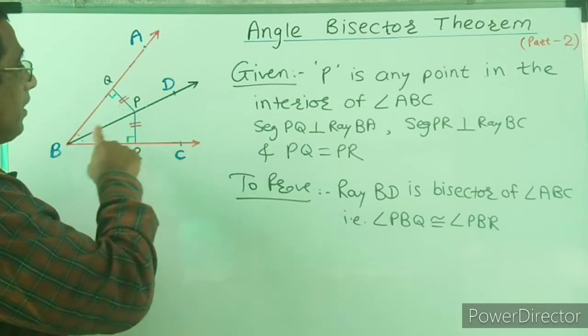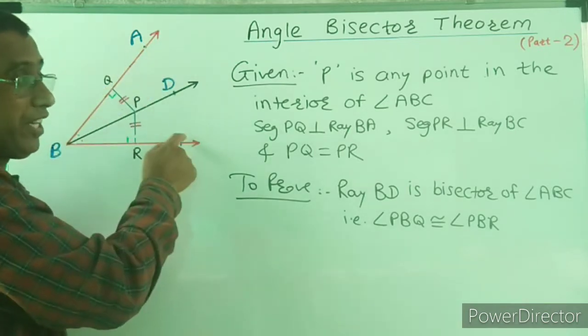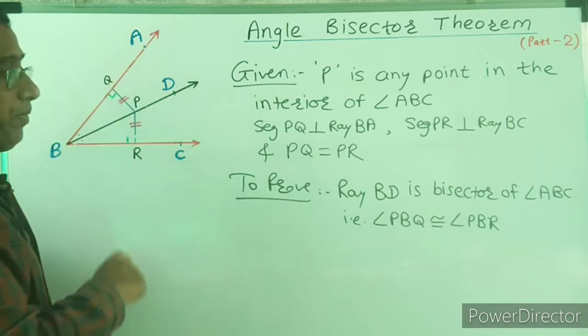To prove that ray BD is the bisector of angle ABC means angle PBQ equals angle PBR.